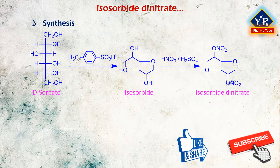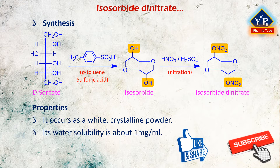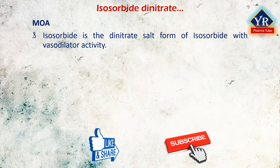Isosorbide dinitrate was first written about in 1939. It is synthesized by intermolecular dehydration of D-sorbitol into isosorbide using paratoluenesulfonic acid, and subsequent nitration of the two alcoholic groups by nitric acid. It occurs as a white crystalline powder. Its water solubility is about 1 mg per mL. It is stored in a well-closed container and protected from light.